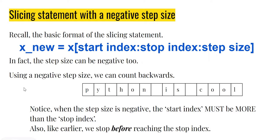First, let us remember the basic format of the slicing statement: x_new, which is a new string being created, is x[start_index:stop_index:step_size]. We are going to look at situations where the step size is negative, which means we start from somewhere on the right and count backwards. When the step size is negative, the start index must be more than the stop index.